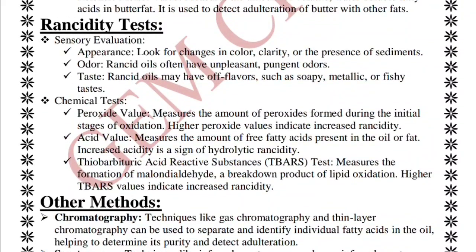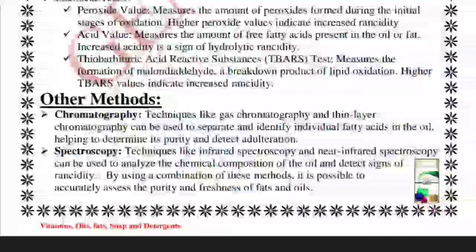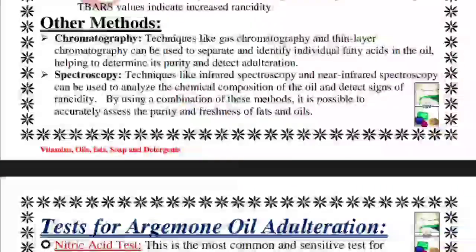For rancidity testing, sensory evaluation checks appearance and odor. Chemical rancidity tests include: peroxide value — higher peroxide indicates more rancidity; acid value, which determines the amount of free fatty acids and indicates hydrolytic rancidity; and the thiobarbituric acid reactive substances (TBARS) test, which measures malondialdehyde, a lipid oxidation breakdown product — higher values indicate increased rancidity. Chromatographic and spectroscopic techniques can also be used.